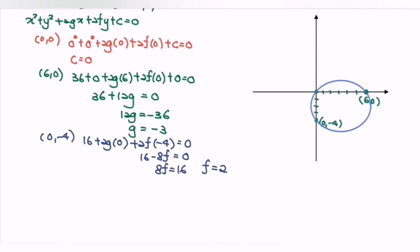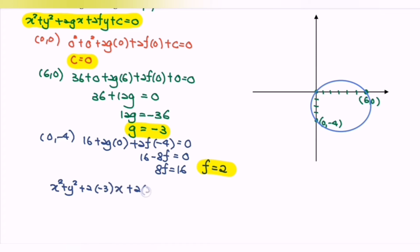Next, substitute the values c equals 0, g equals negative 3, and f equals 2 into the general form. Here we have x squared plus y squared plus 2(negative 3)x plus 2(2)y plus 0 equals 0. Rewriting, the general form of the equation is: x squared plus y squared minus 6x plus 4y equals 0.